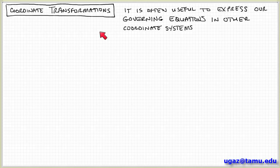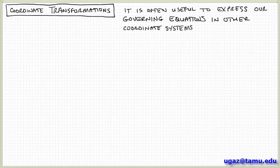In this series of videos we're going to talk about a new topic called coordinate transformations. We're going to find many times in fluid mechanics that it's useful if we can express the governing equations in terms of different coordinate systems. We talked about already conservation of mass and conservation of momentum. These are all examples of governing equations that we may want to express in different coordinate systems because it may make the equations easier to obtain a solution.